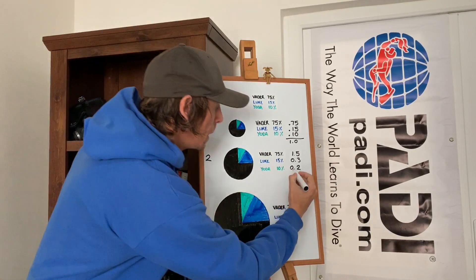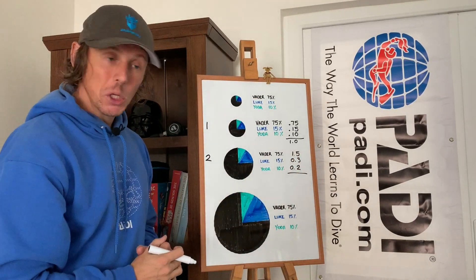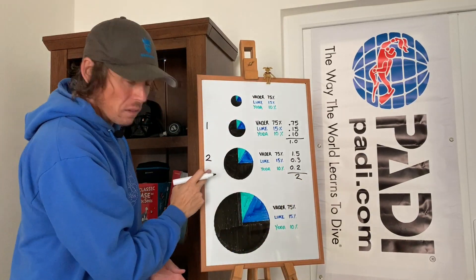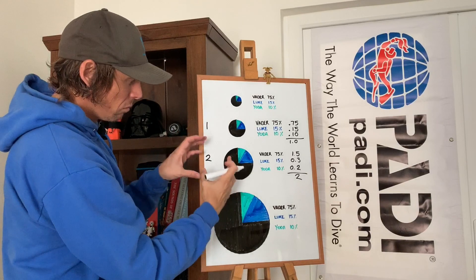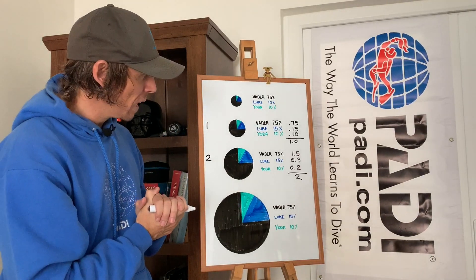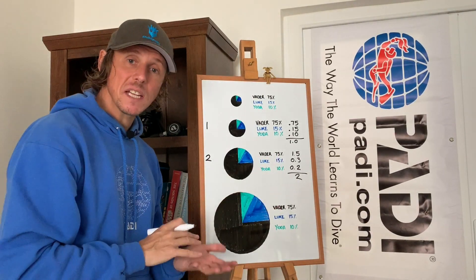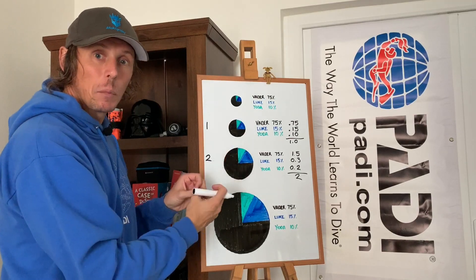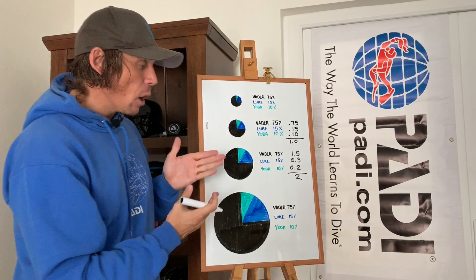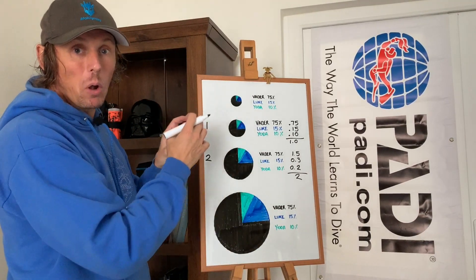So 15% is 0.15 times 2, which is 0.3. And 10% is 0.10 times 2, which is 0.2. They're still contributing the same proportions but of a bigger unit. If we add them together — 1.5, 0.3 and 0.2 — you get 2, which is the total pressure of where this is being used. It's still 75%, 15%, and 10% of the overall thing, but that overall thing is now bigger.